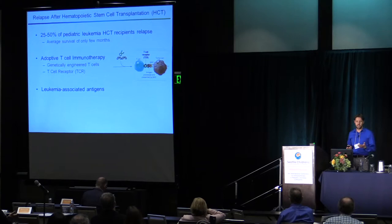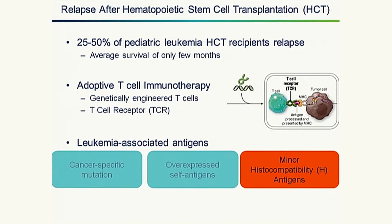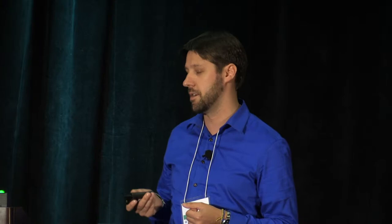This leukemia-associated antigen can be a cancer-specific antigen, an overexpressed self-antigen, or a minor histocompatibility antigen. The focus of our work is in the minor antigens. Normal cells present peptides derived from self-intracellular proteins on their cell surface in the context of HLA molecules.